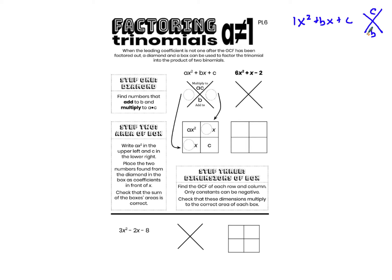But I can do something really similar. Instead of multiplying just to c, I'm looking for the two numbers that multiply to a times c. a times c goes in the top of my diamond. So in this case 6 times negative 2, which is negative 12. Other than that my diamond is the same — the bottom is looking for two numbers that add to b, in this case add to 1. And now I just do my diamond like I normally do: two integers that multiply to negative 12 and add to 1.